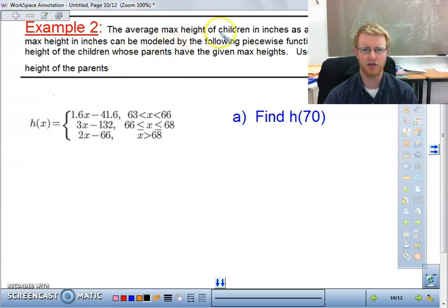So it says, the average max height of children in inches as a function of their parents' max height in inches can be modeled by the following piecewise function. Okay, let's stop there because this is one of the hardest parts about functions that students miss. When you're not given an equation and you're being told in a story problem what is the function of what, you need to be able to understand that.